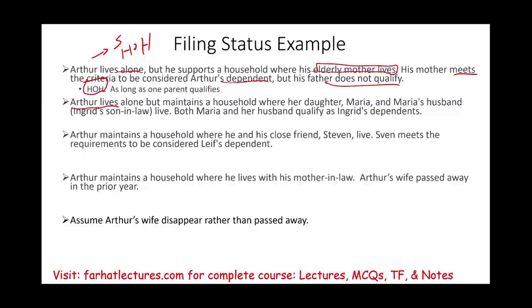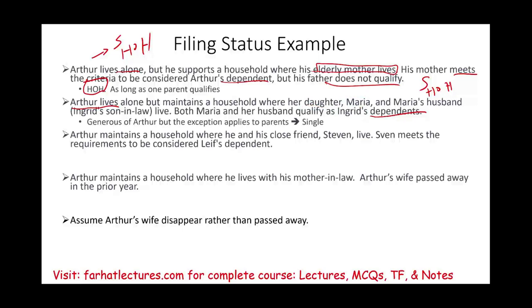Scenario two: Arthur lives alone but maintains a household where his daughter Maria and her husband live. Both Maria and her husband qualify as his dependents. Arthur is not married, so his options are single or head of household. However, the exception for supporting a household not shared with the taxpayer applies only to parents. Since his daughter does not live with him, he cannot claim head of household. If his daughter and son-in-law lived with him in the same household, he could claim it — but that exception does not extend to children.